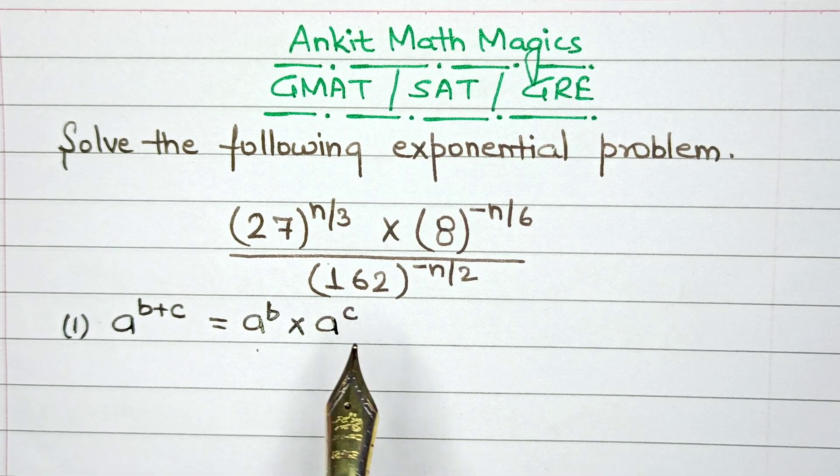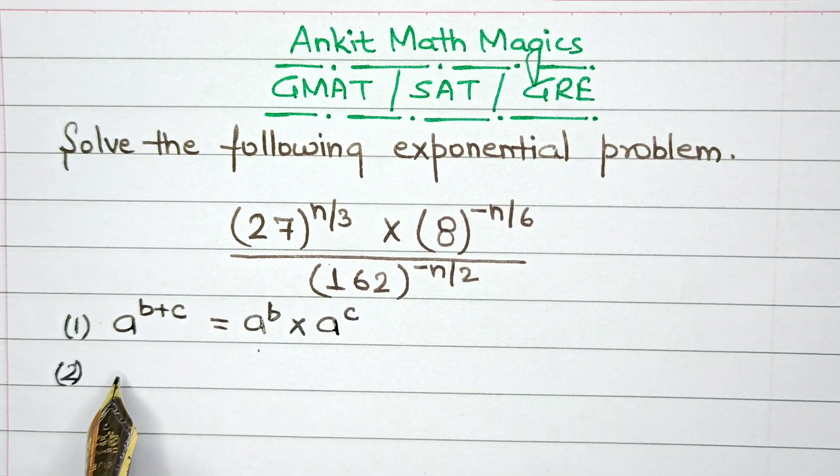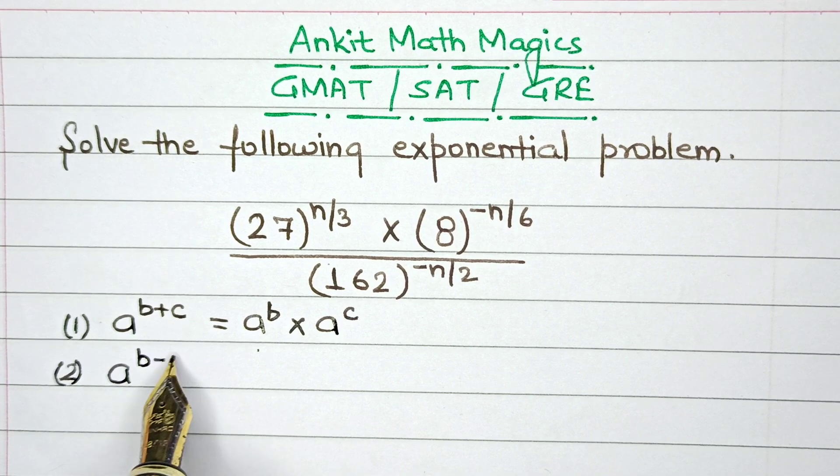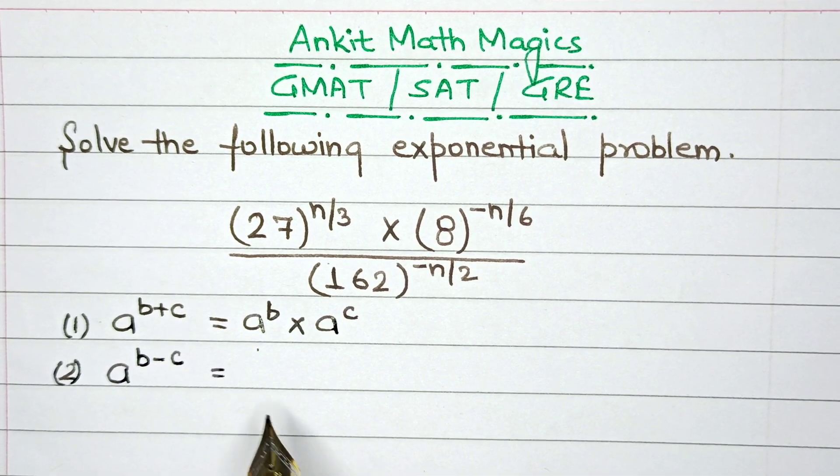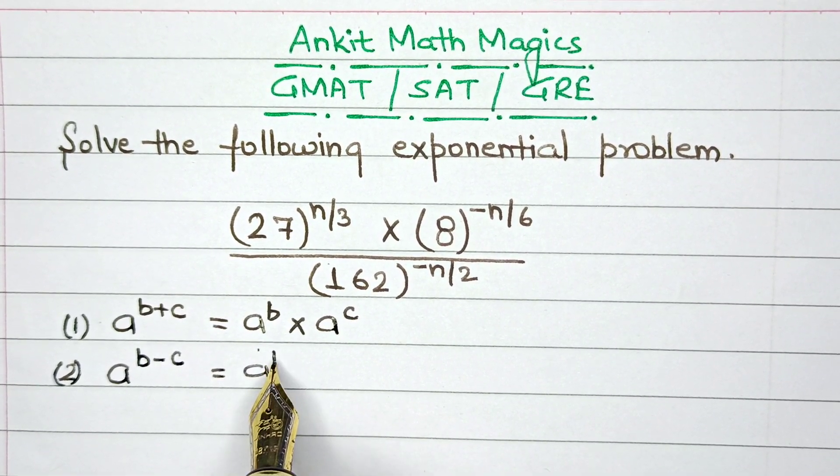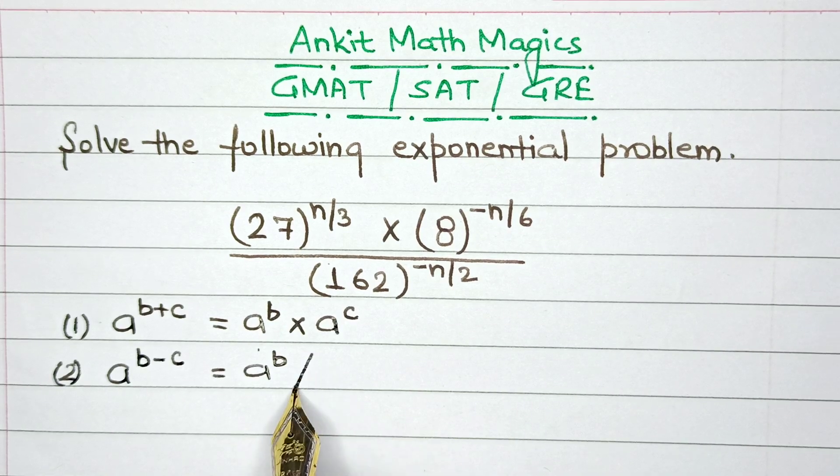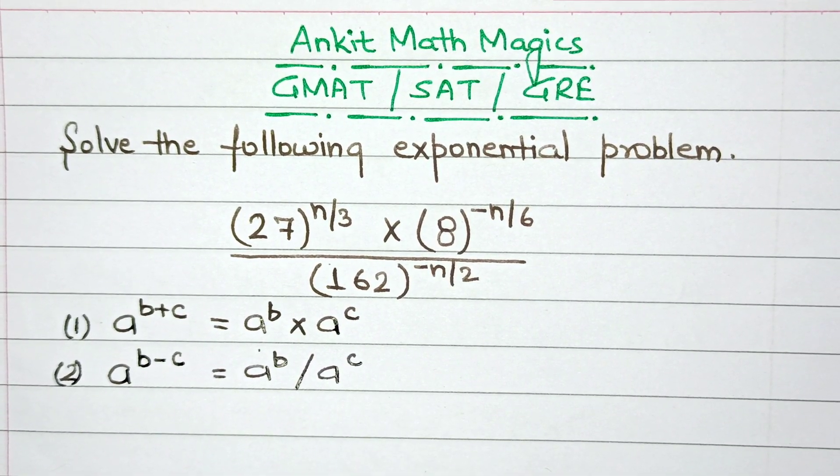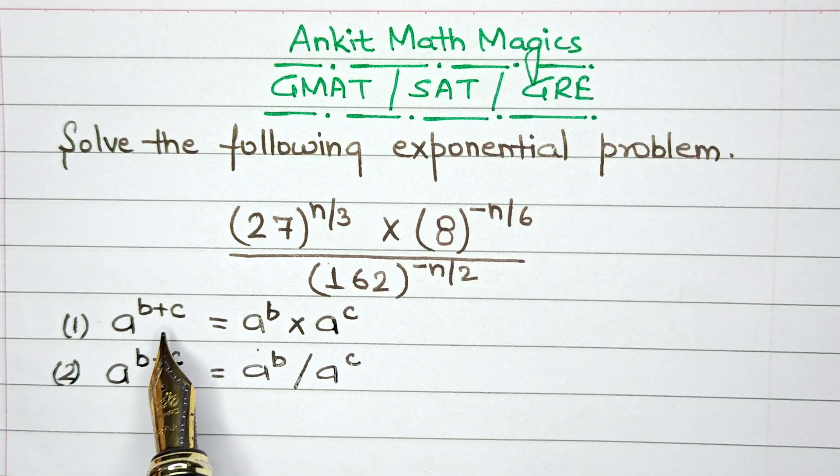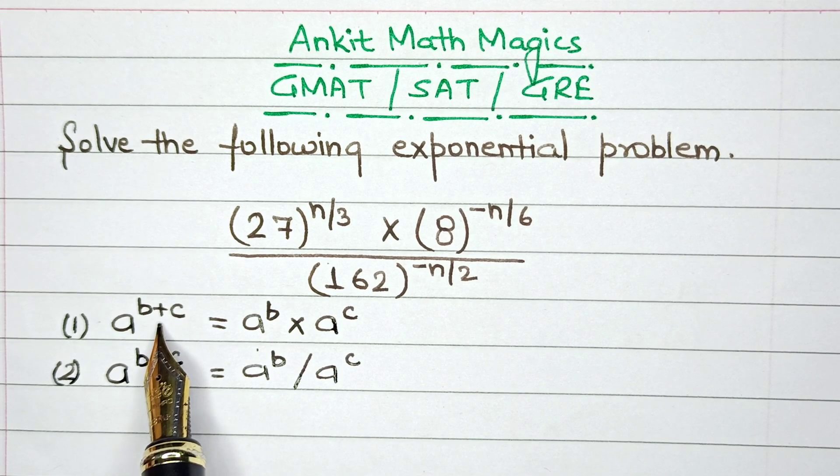The second formula is that if a raised to the power b minus c is one of the conditions, then this can be written as a raised to the power b divided by a raised to the power of c. So as you can make out, whenever we have an addition of powers it can be bifurcated into a product form...